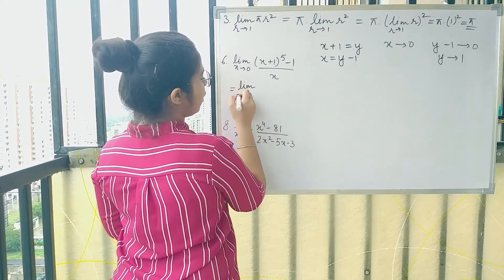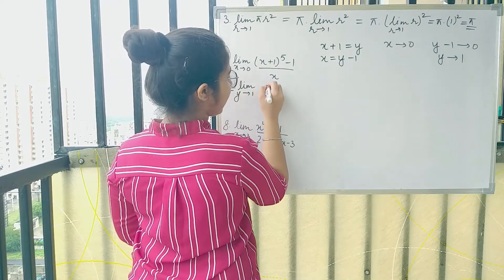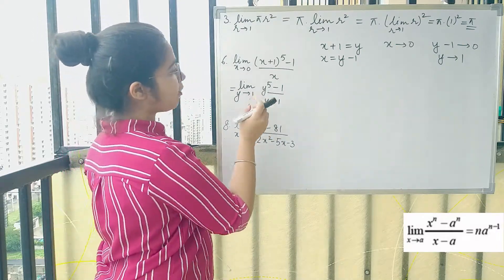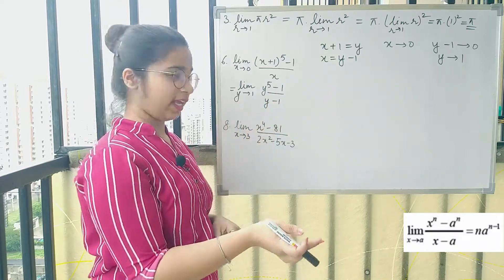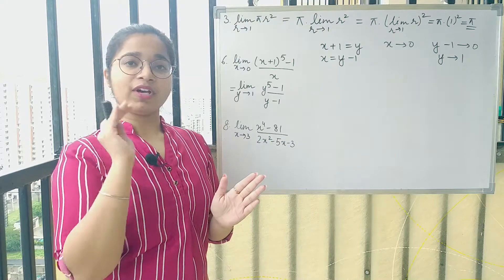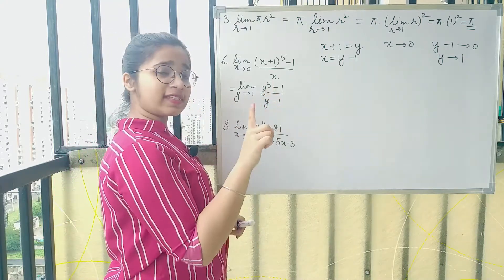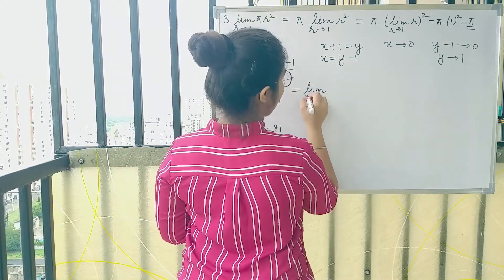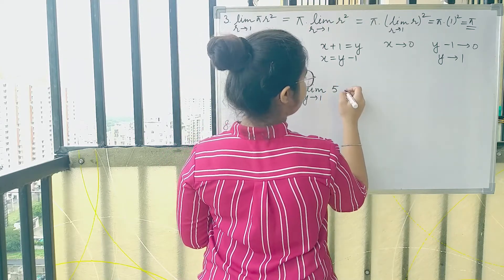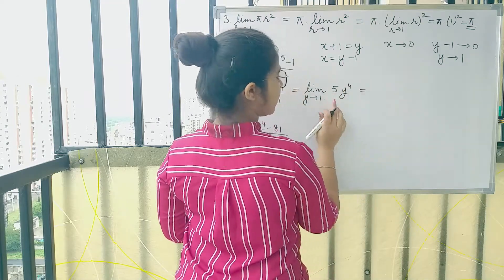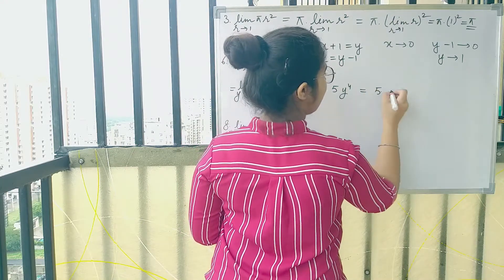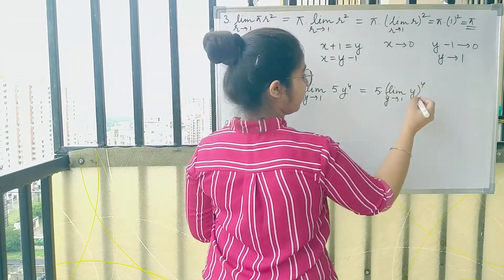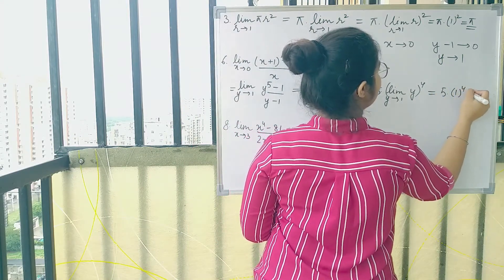Substituting into the function, we have limit y tends to 1 of (y⁵ − 1) over (y − 1). This matches the theorem: limit x→a of (xⁿ − aⁿ)/(x − a) = n·aⁿ⁻¹. Here n is 5 and the limit is y tending to 1. By that theorem, the answer is 5·y⁴ evaluated at y = 1, and since y⁴ = 1, we take out the constant 5. When we solve this the answer is 5.